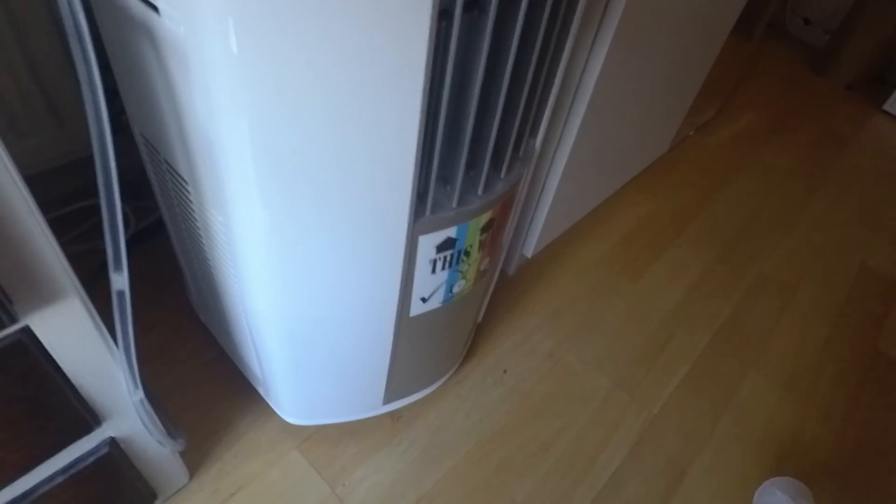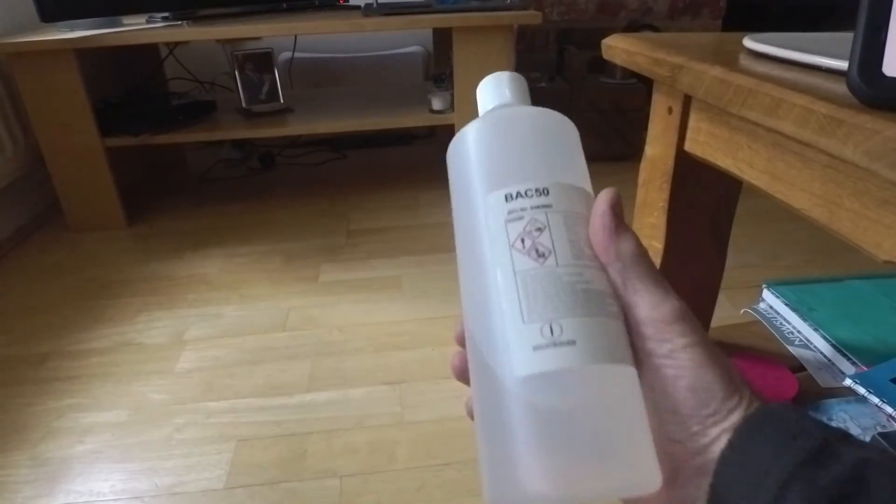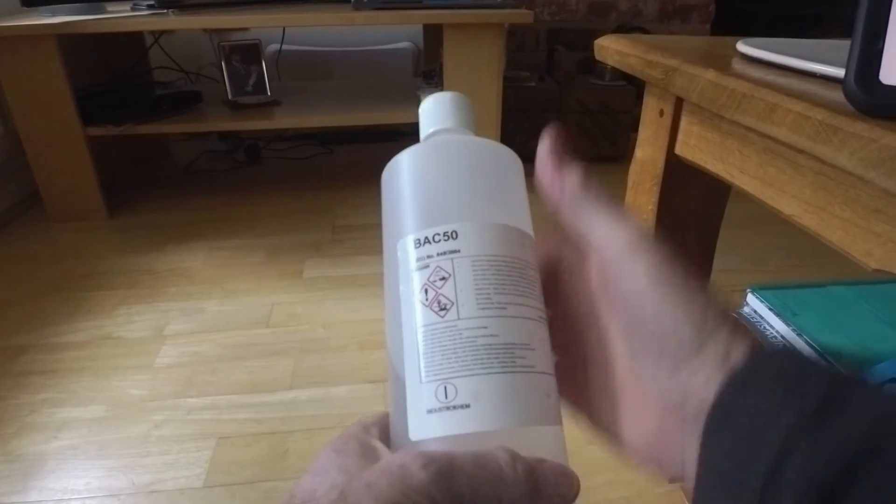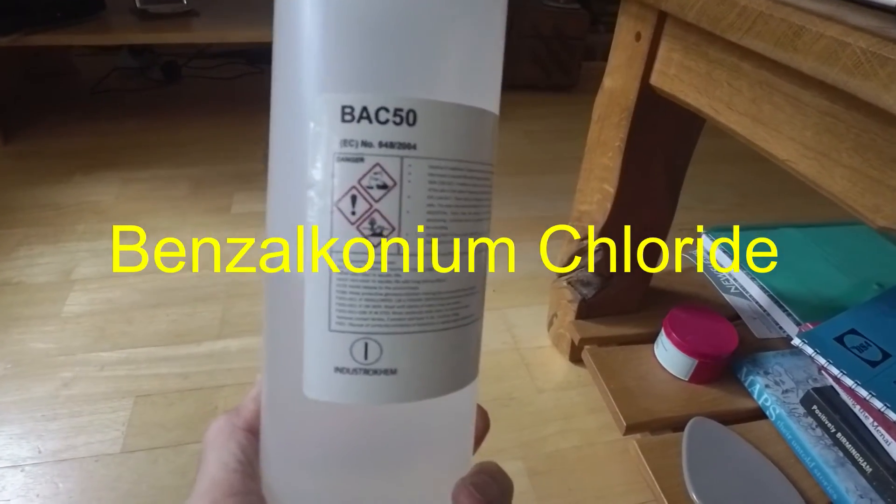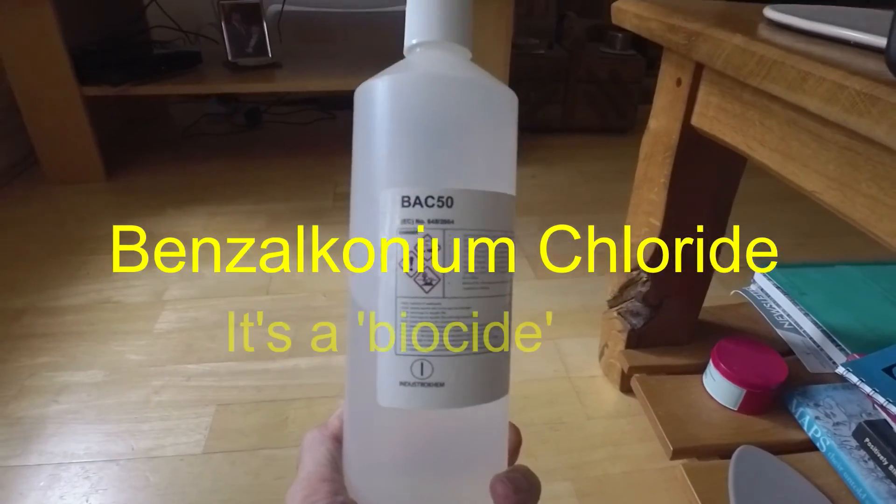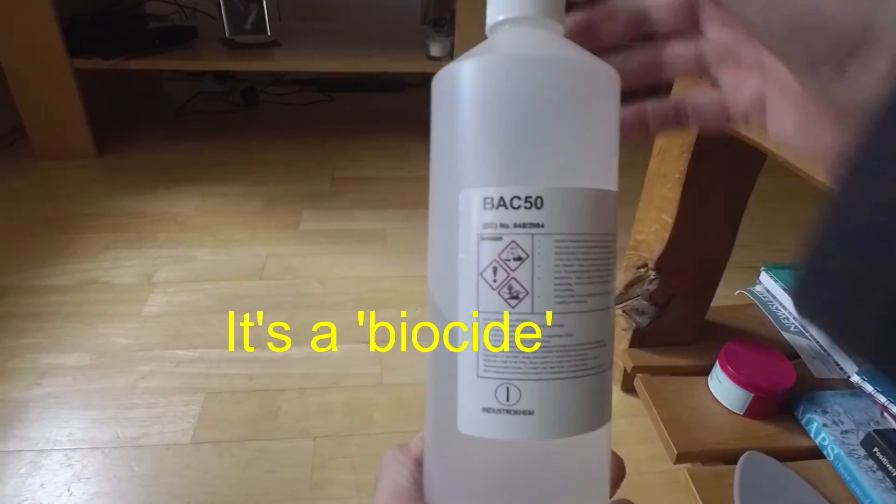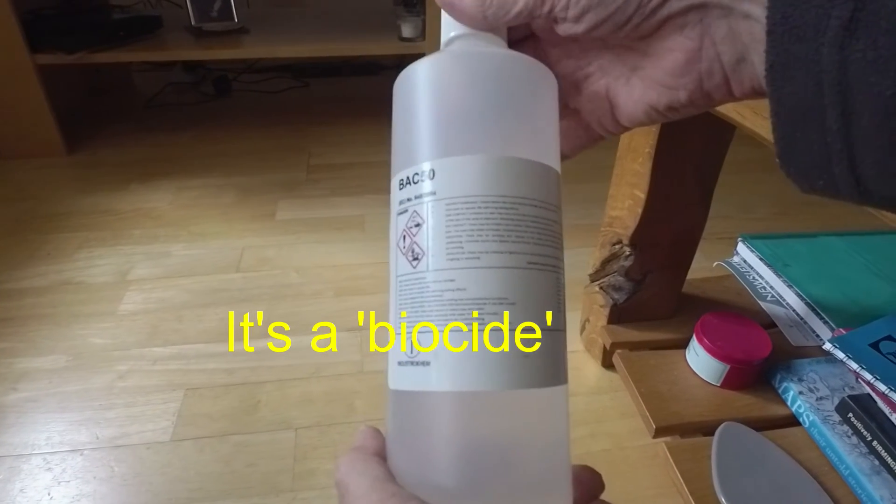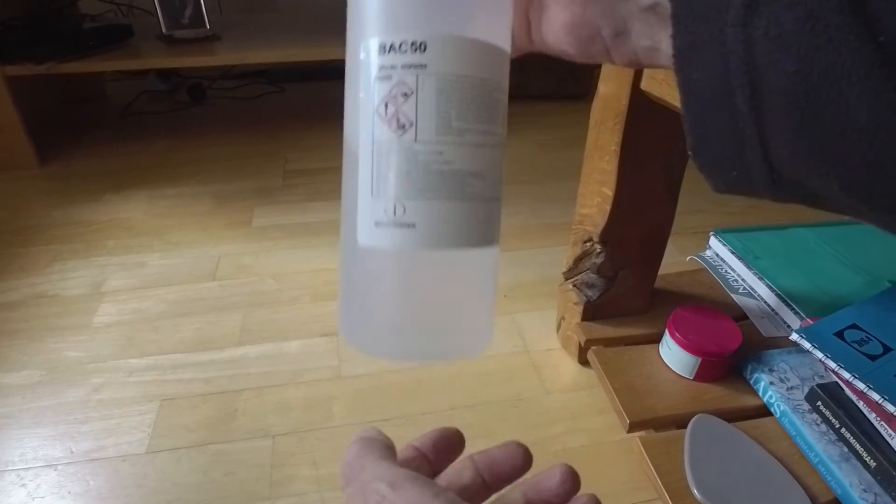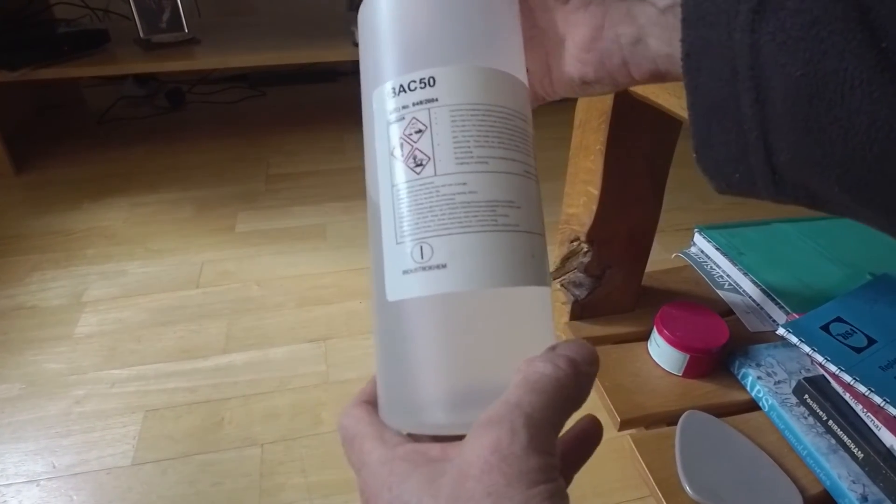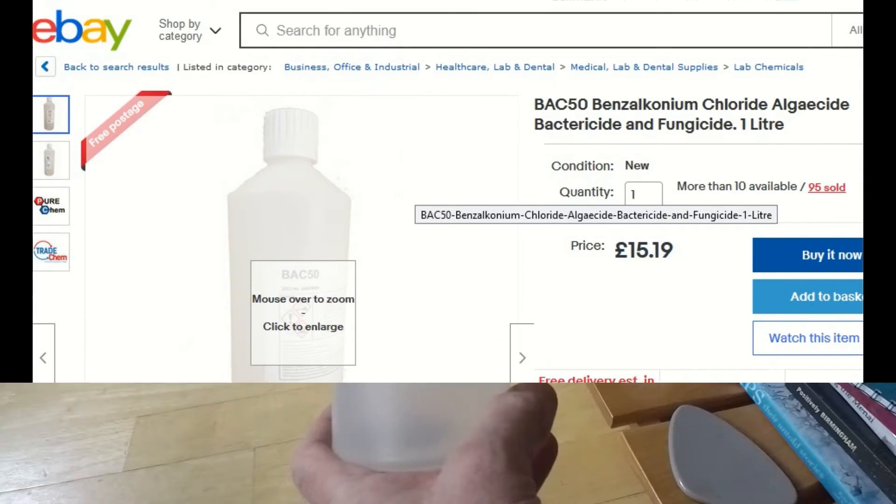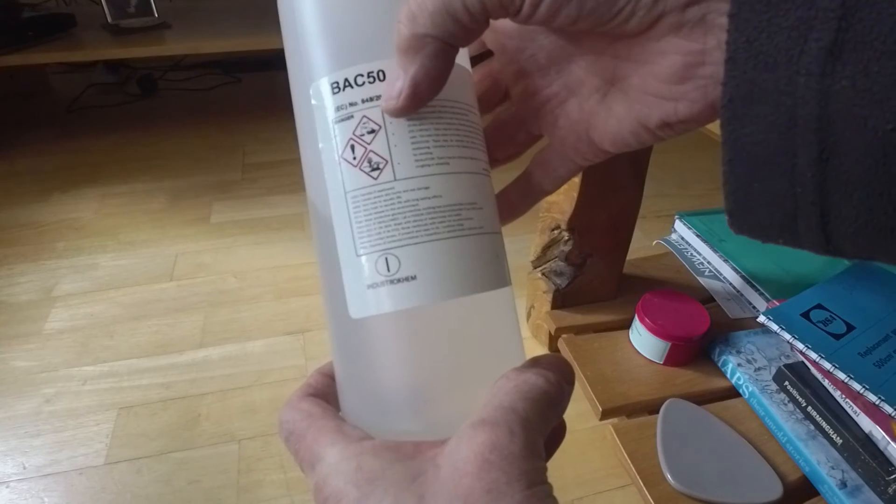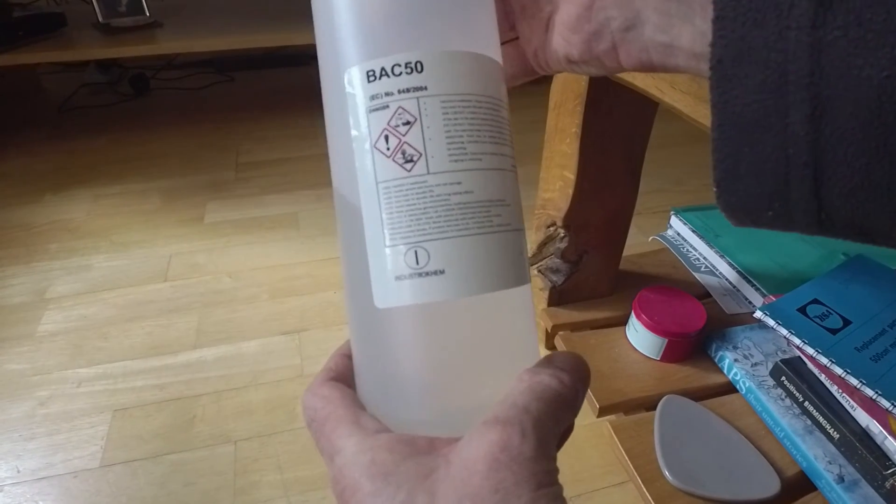So I'll show you the stuff I use to flush it out with. This is the stuff we use to disinfect the air conditioner, which is benzalkonium chloride. It's quite a well-known antiseptic, antiviral, antibacterial that's used in a lot of products. But you can actually just buy the raw chemical in this form on Amazon or eBay. BAC 50 implies that it's 50-50 with water, so it's a 50% solution.